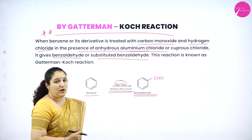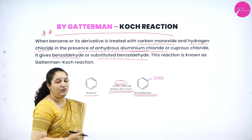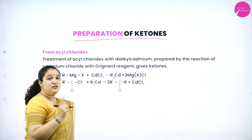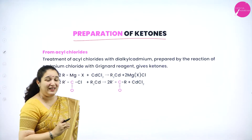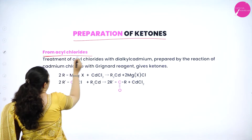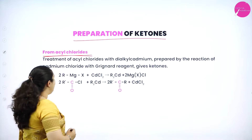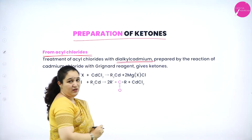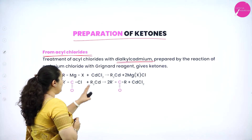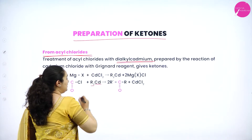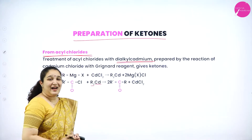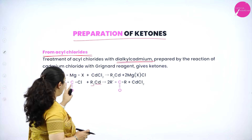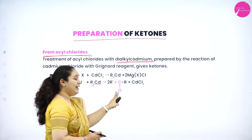That's about the preparation of aldehydes. Next is preparation of ketones. The first method of preparation of ketone is from acyl chloride. We take acyl chloride with dialkyl cadmium — that is cadmium with two alkyl groups. When acyl chloride is treated with dialkyl cadmium, we get ketones.